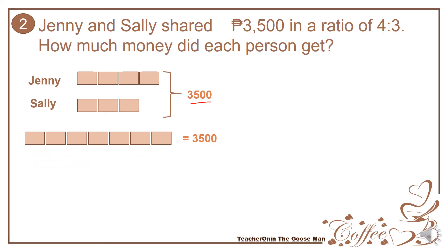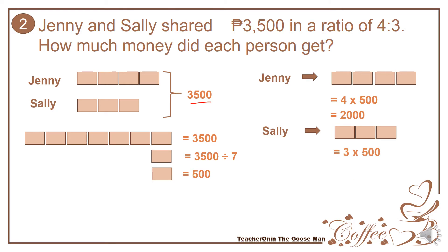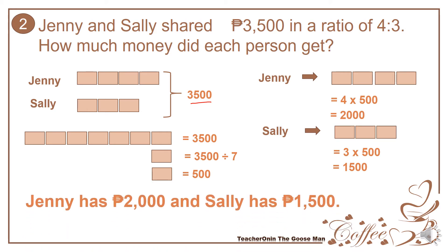I want to find out the value of each part. Since I have 7 equal parts, I'll divide 3,500 by 7. Each part is equal to 500. But I want to find out the value for Jenny, and take note that Jenny has 4 parts. So 4 times 500, which is the value of each part — Jenny has 2,000. Likewise, Sally has 3 parts and each part is equal to 500, so 3 times 500 is equal to 1,500. Jenny has 2,000 pesos and Sally has 1,500 pesos.